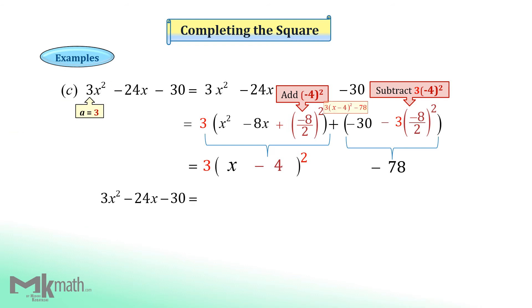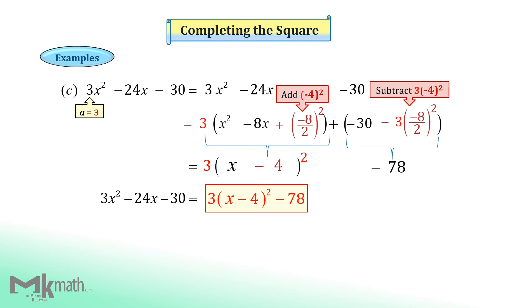So the vertex form becomes 3 times x minus 4 squared minus 78. If you expand the vertex form, you should get the standard form on the left.